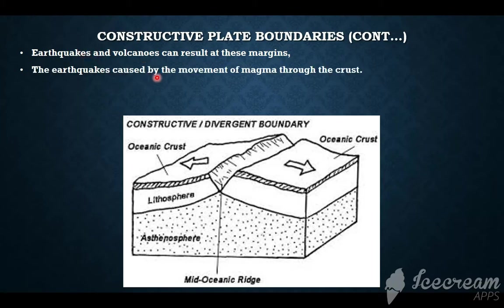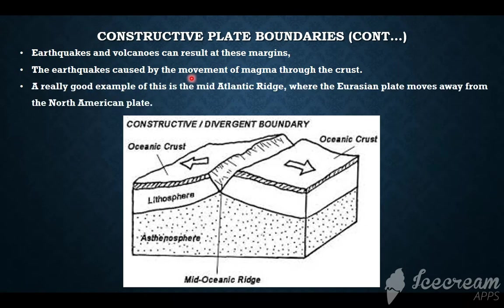The earthquakes are caused by the movement of magma through the crust — as magma forces its way through, mild earthquakes occur. A good example is the Mid-Atlantic Ridge, where the Eurasian plate moves away from the North American plate. You need to take note of the plates that result in certain landforms.